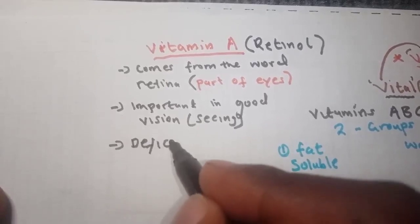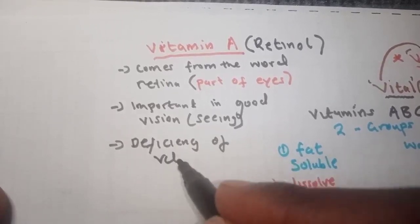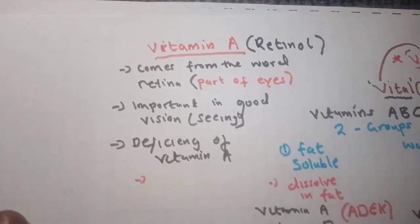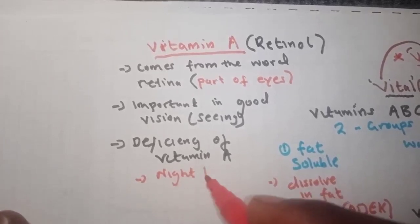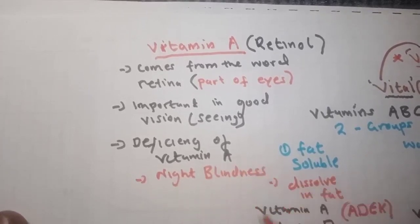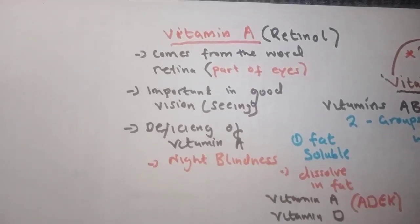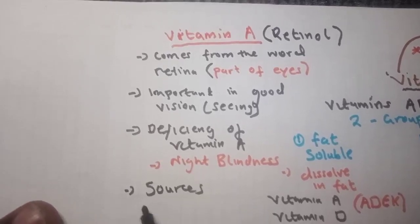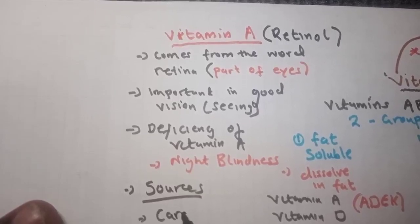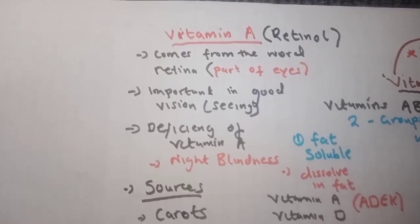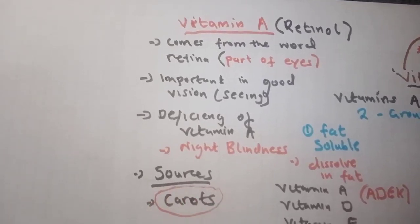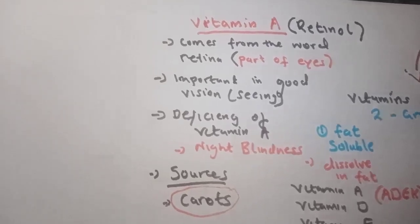Deficiency of vitamin A results in night blindness. The most common source of vitamin A is carrots, though there are many other sources.